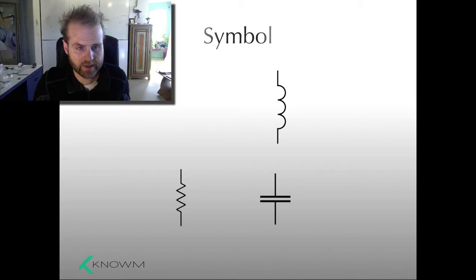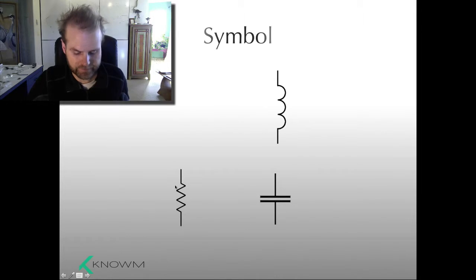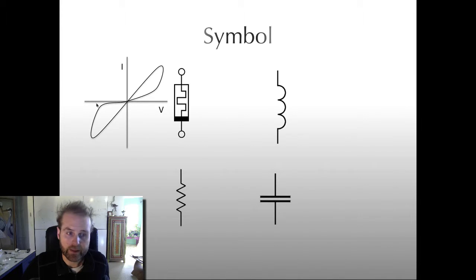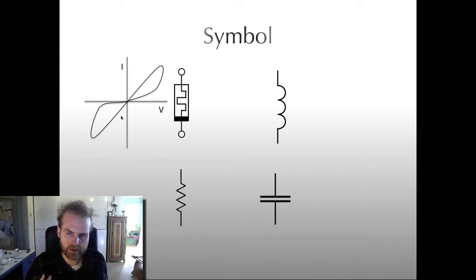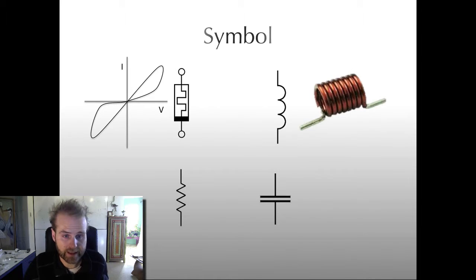So we have some symbols here. Top right, we have the symbol for an inductor, below a capacitor, and over here we have a resistor. Now this is the symbol that the world currently uses for a Memristor, and I'm showing you here the IV curve of a Memristor — a pinched hysteresis loop. I'll keep that in mind. Now I'm going to make two main points about these symbols and go through them one at a time.